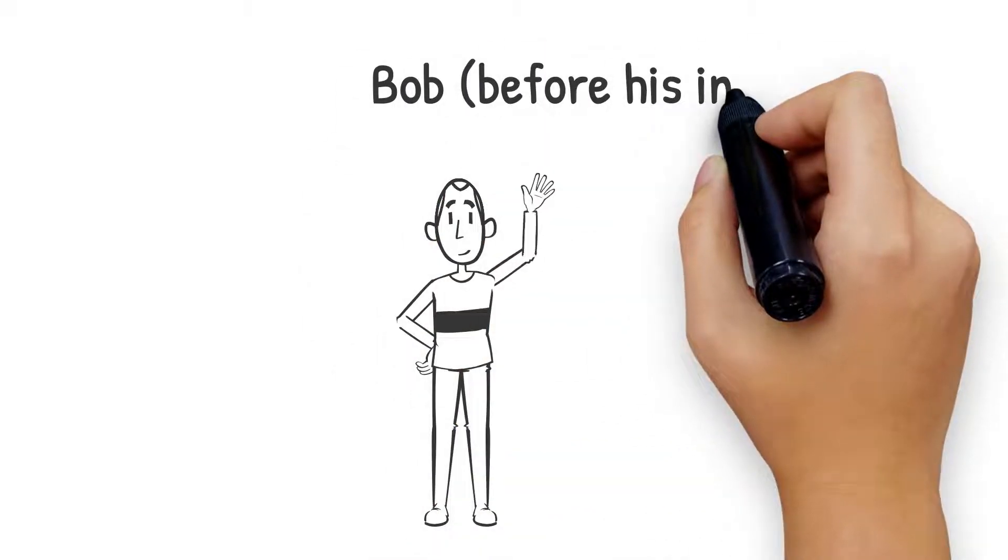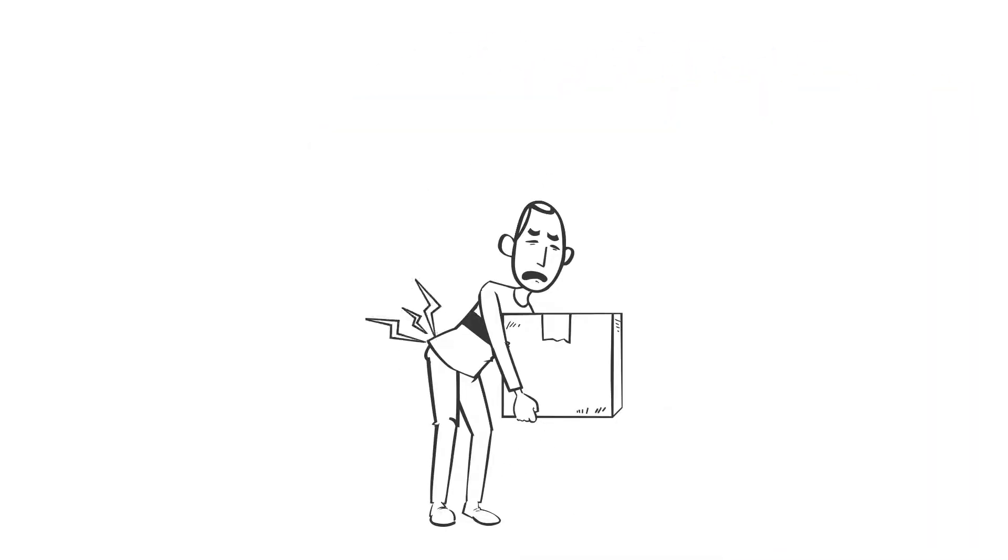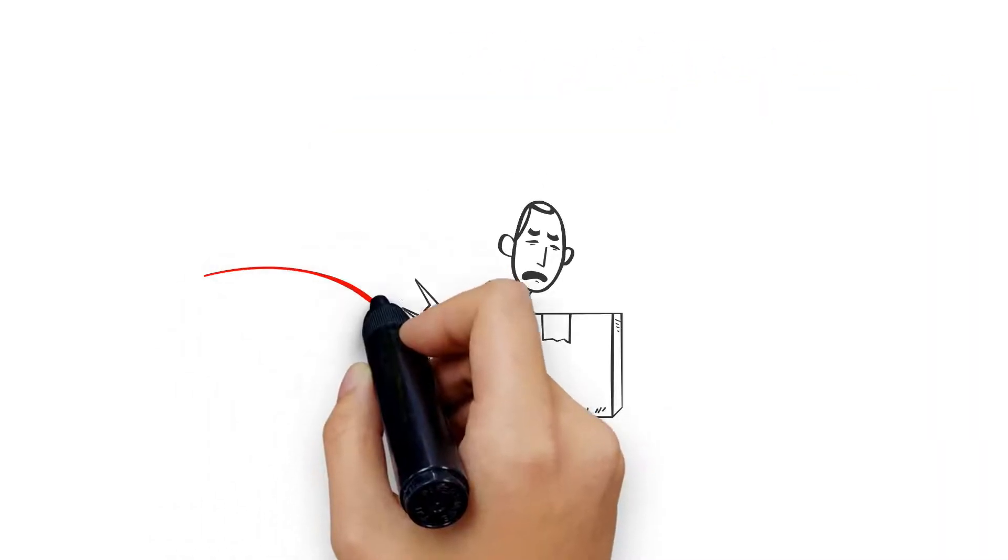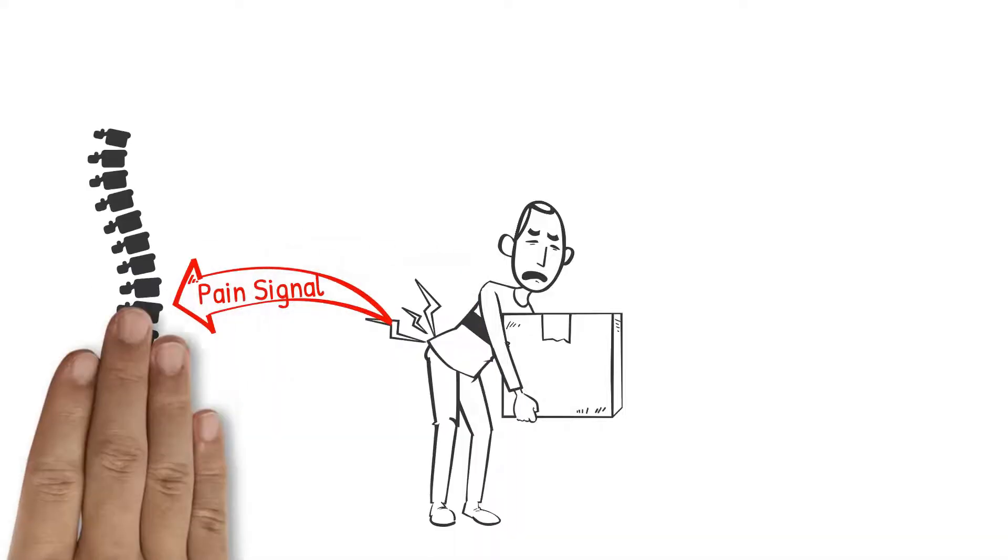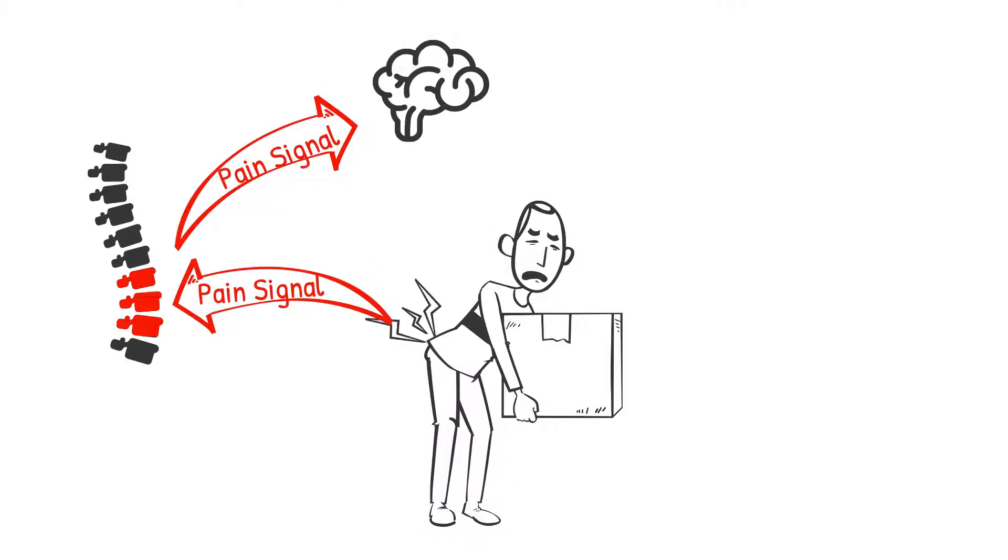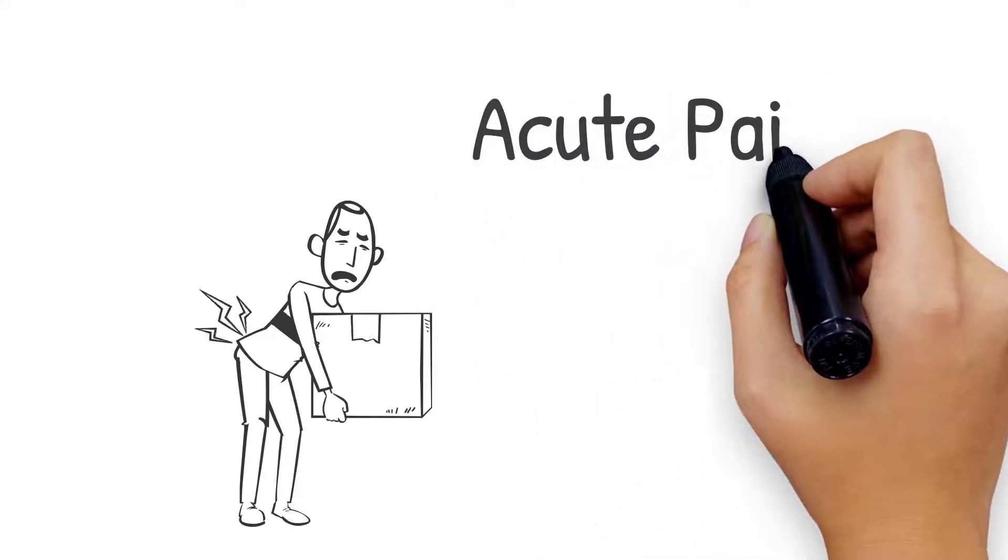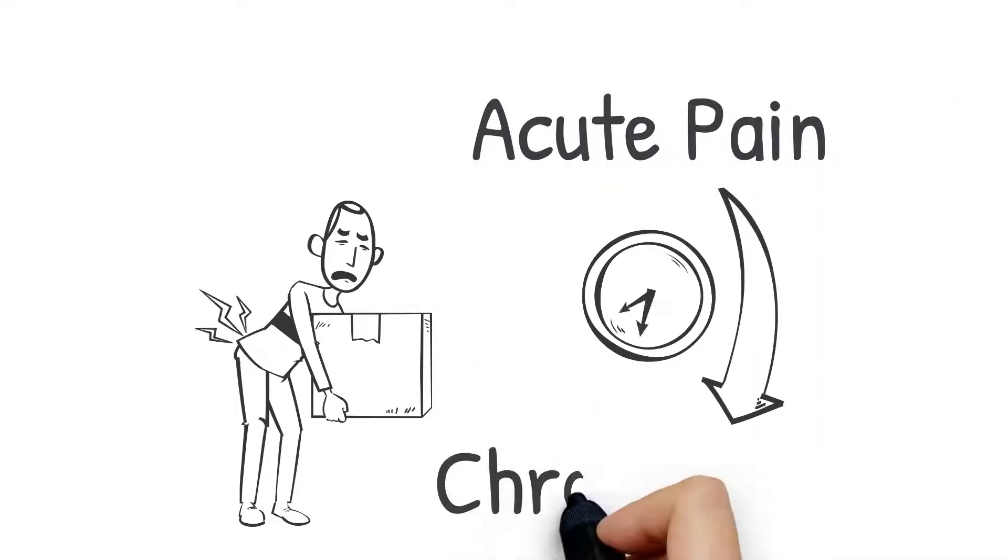Chronic pain often begins with acute pain from an injury that's left untreated. Let's use Bob as an example. Bob injured his back while lifting a heavy box. He felt immediate pain because the nerves in the injured muscle sent a pain signal to his spine, where information is processed and relayed to the brain to create the sensation of pain. This immediate perception of pain is known as acute pain, which can then manifest into chronic pain if Bob doesn't take immediate and appropriate action.